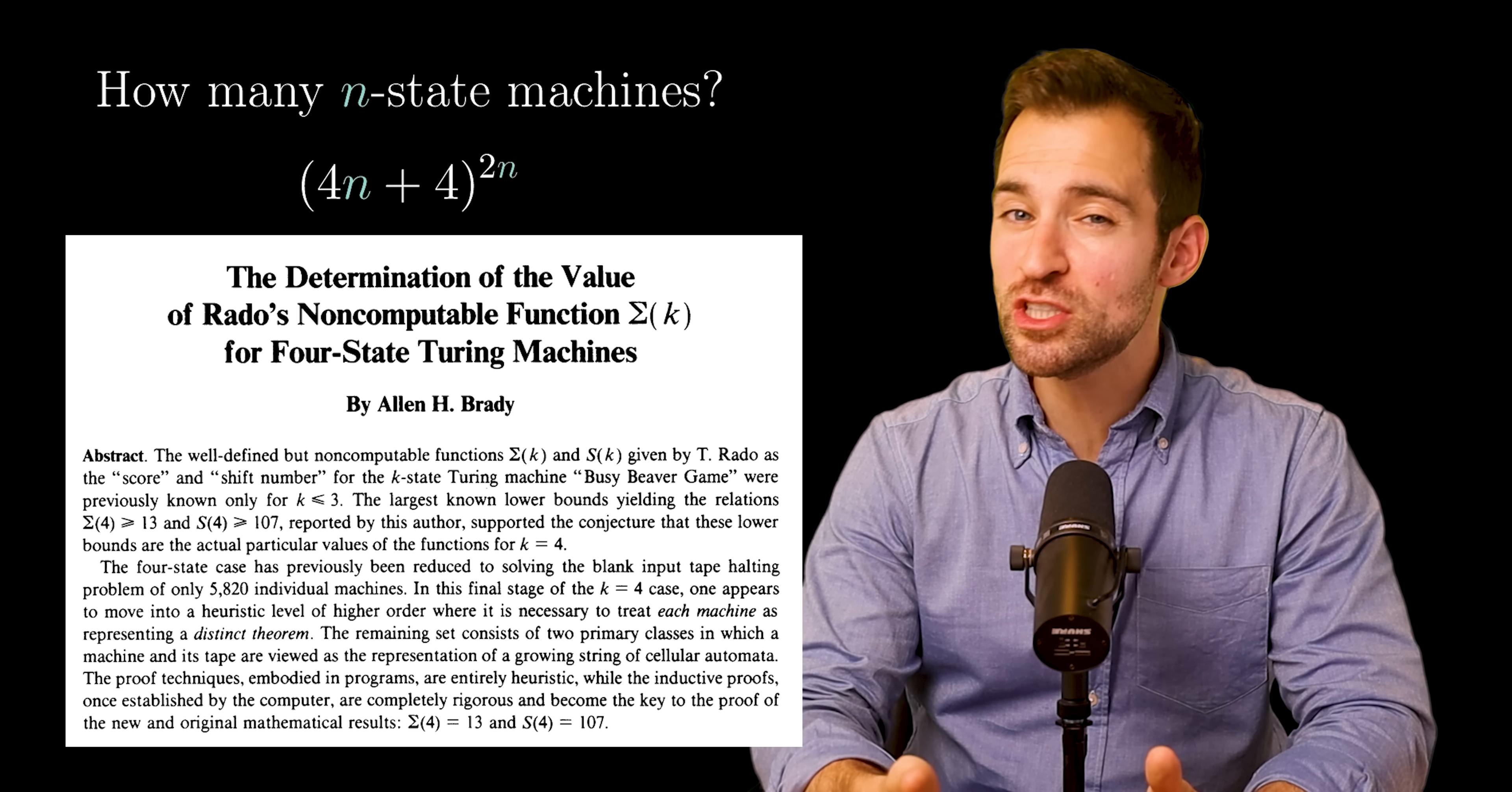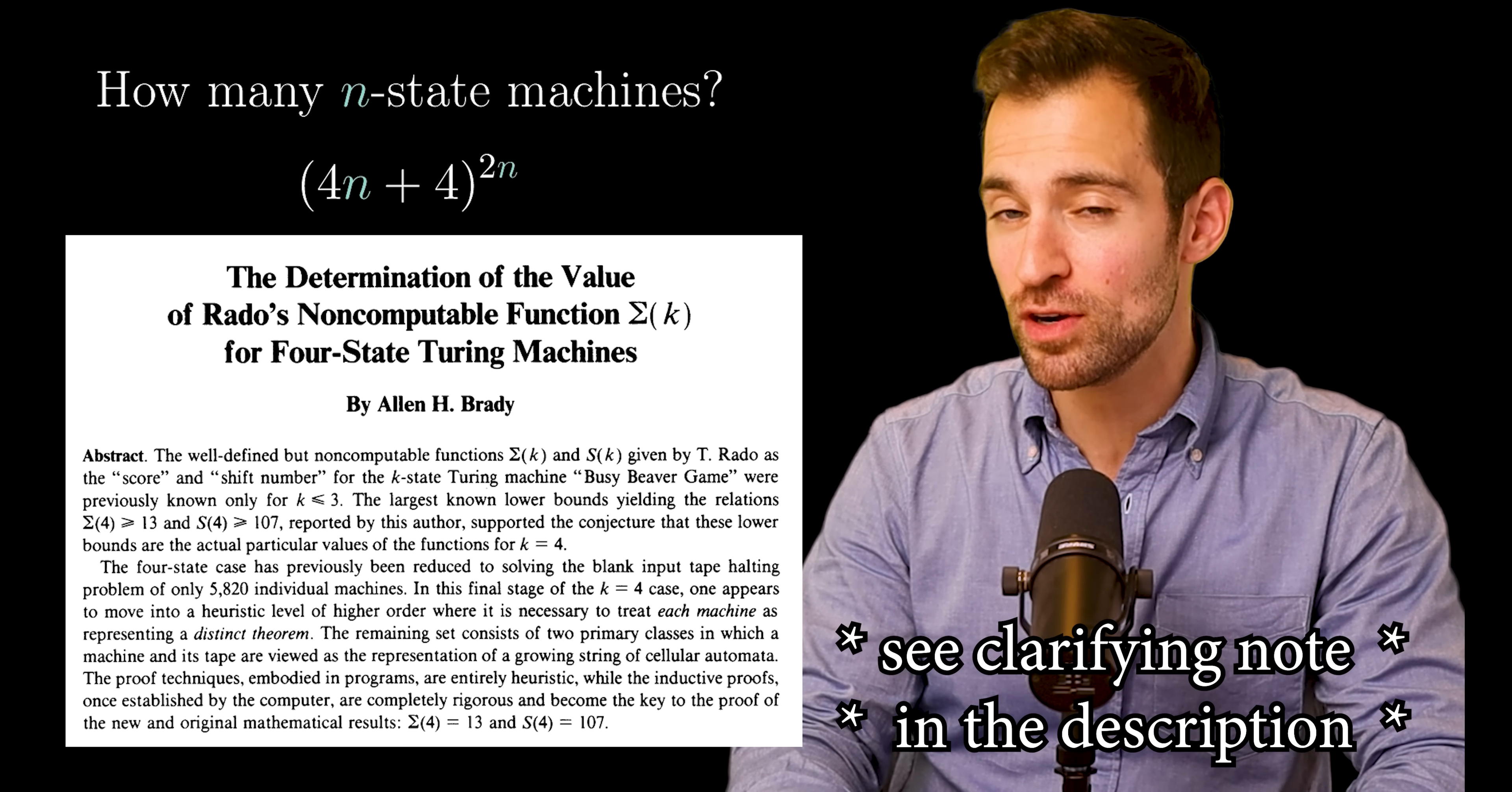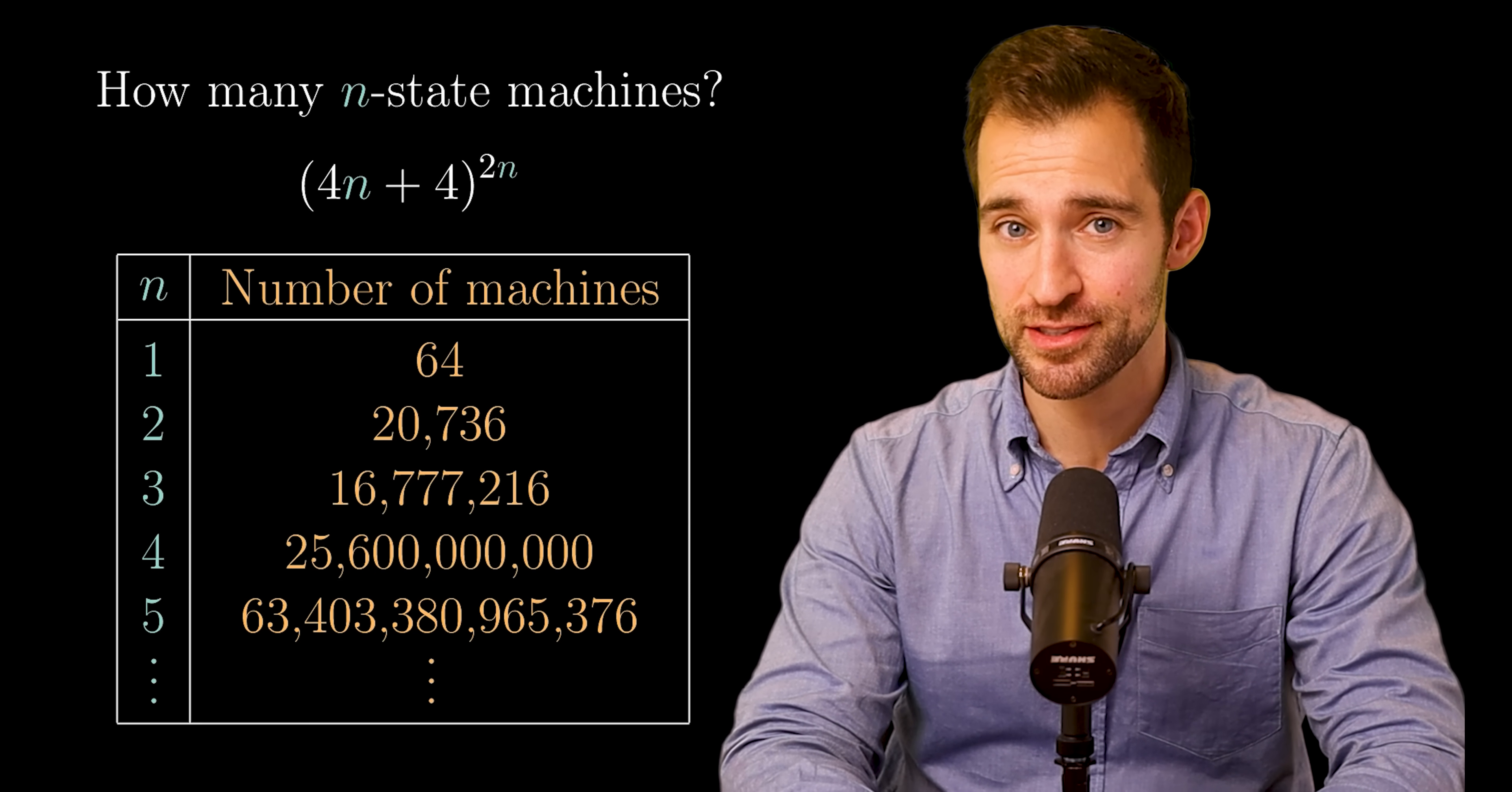The difficulty is in determining which machines will halt. There's no general solution, so individual machines need to be theorized over for years, whittled down to a small group that halt, and ran to produce the max count of ones. And we haven't been able to calculate it for five states, since that involves trillions of machines, each more complicated than before. And this struggle barely reflects how truly untouchable this function is.